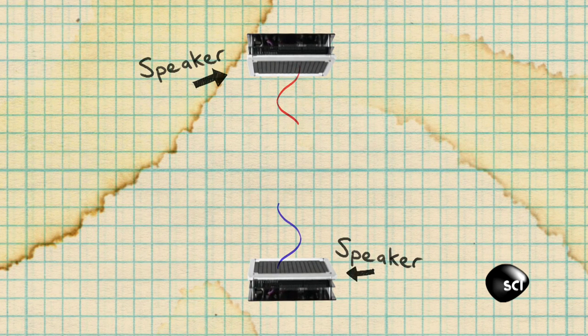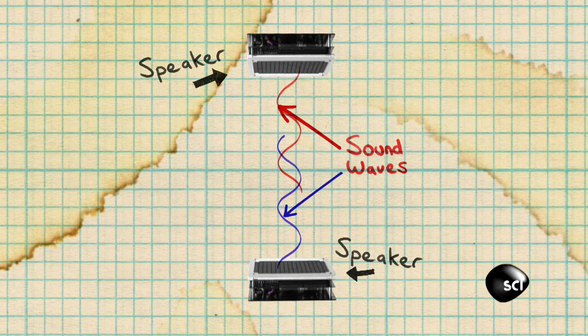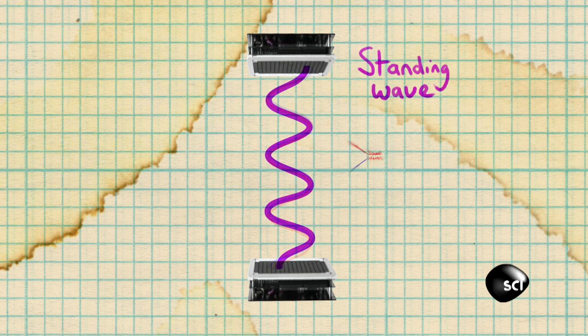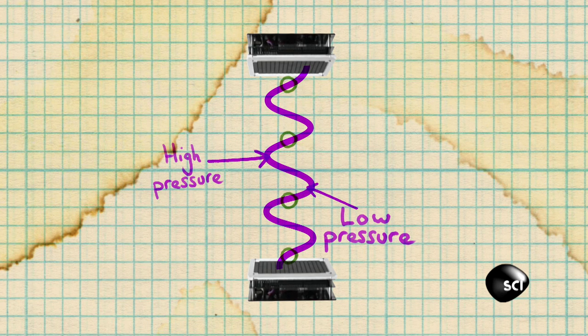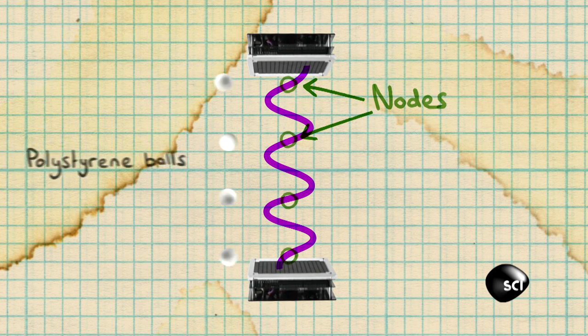That's where you get two waves from different directions interfering and creating this static pattern of high pressure areas, low pressure areas, and neutral areas called nodes. These polystyrene balls collect just under one of those nodes, which is on top of an area of really high pressure in the standing wave.